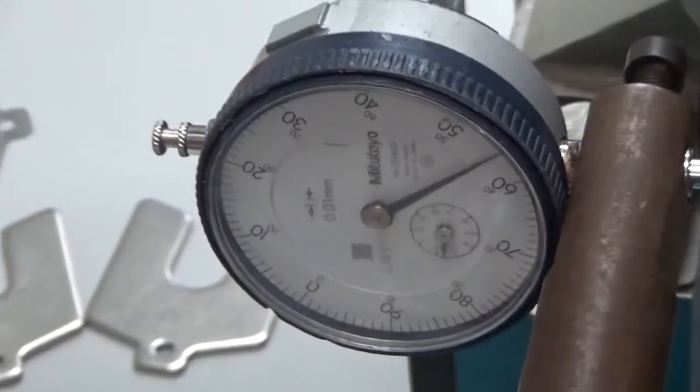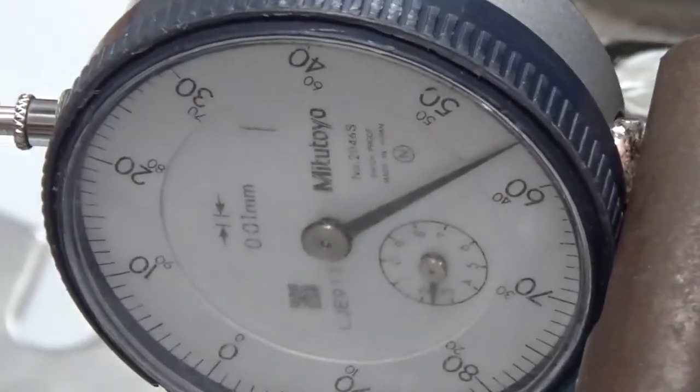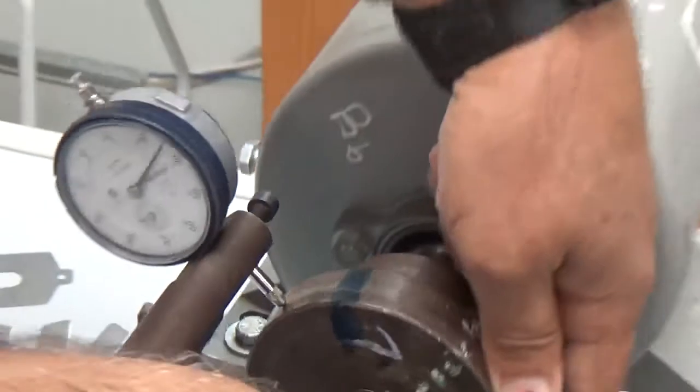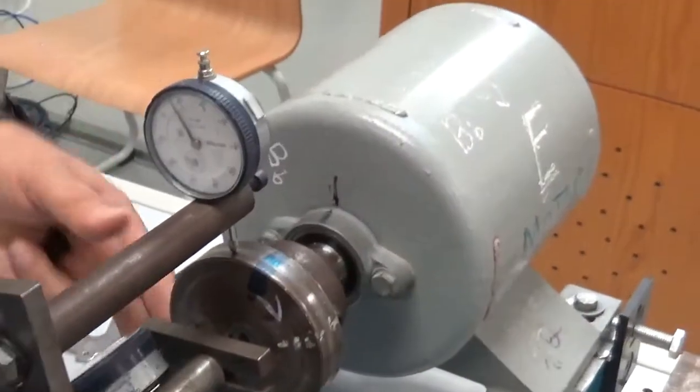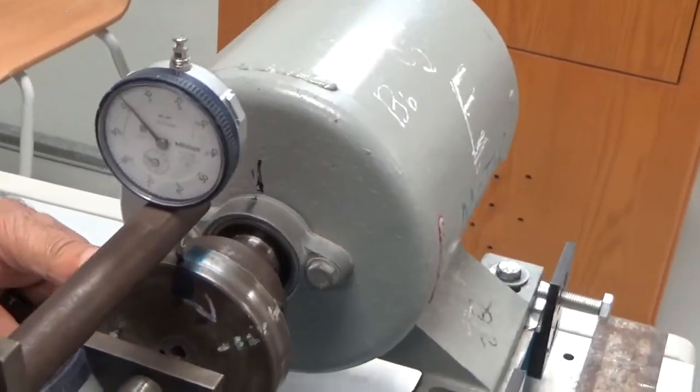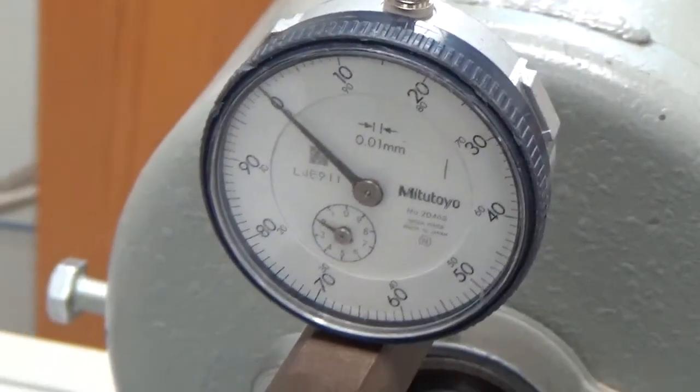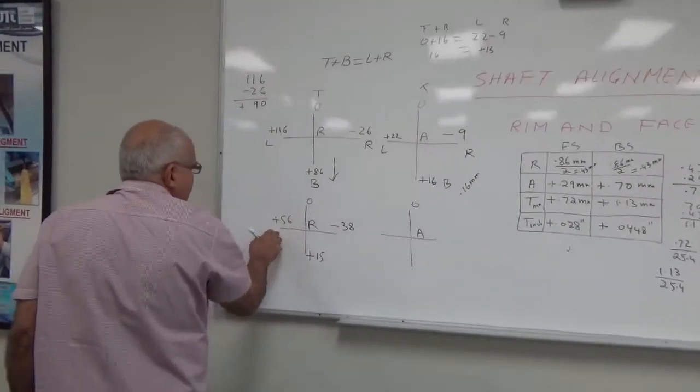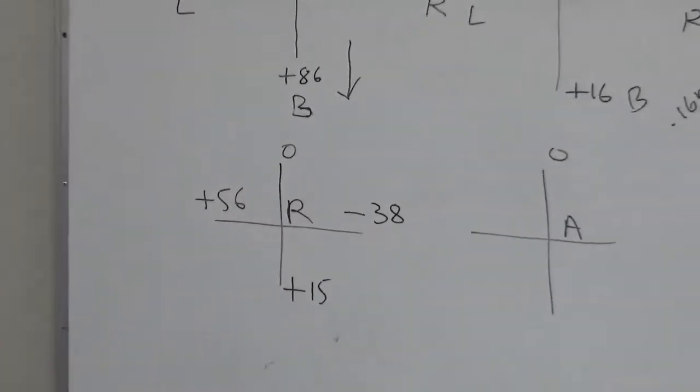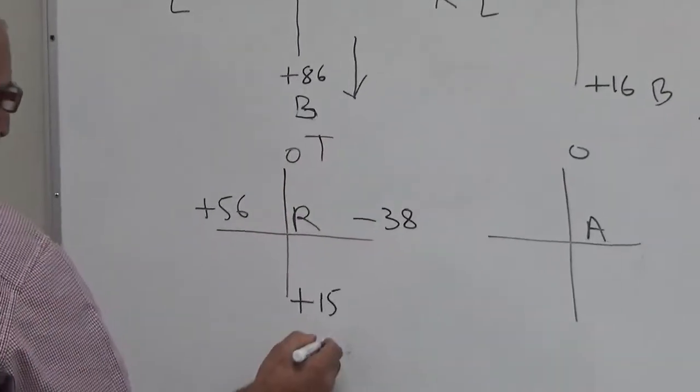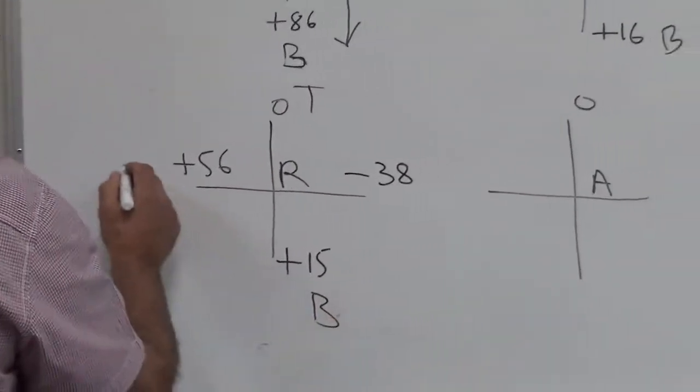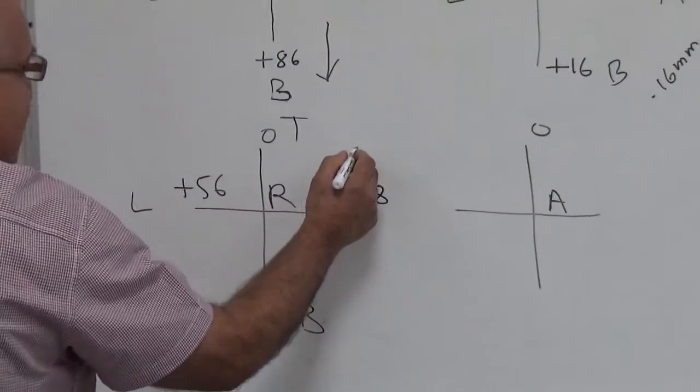And then you come again on the top, it will become, should become zero. So plus 56, this is plus 56 and this is top, this is bottom, this is left, this is right.